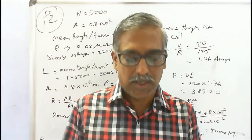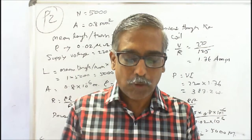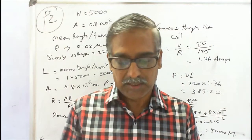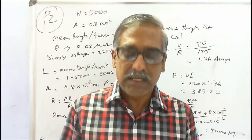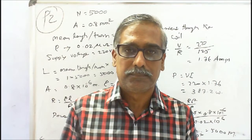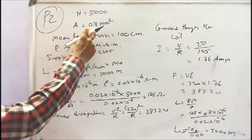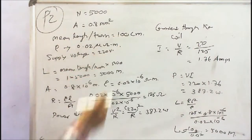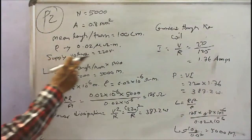The second problem: a coil consists of 5000 turns of copper wire having a cross-section of 0.8 mm². The mean length per turn is 100 cm. The resistivity of copper at normal working temperature is 0.02 micro-ohm-meter. Calculate the resistance of the coil, the power dissipated when connected across a 220-volt supply, and the current through the coil.